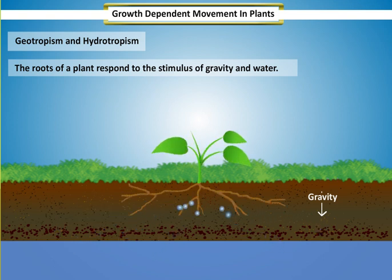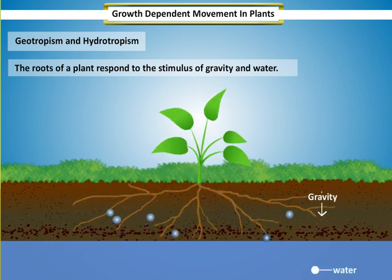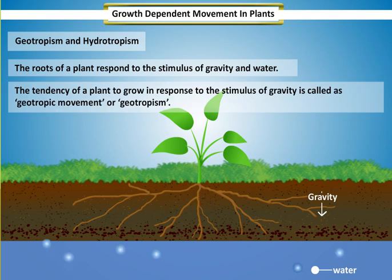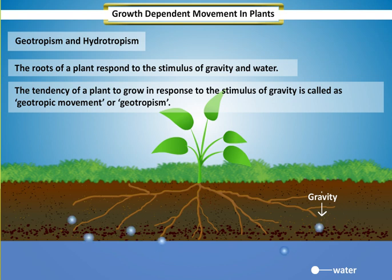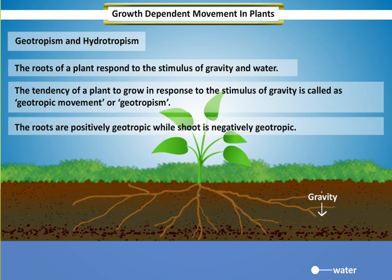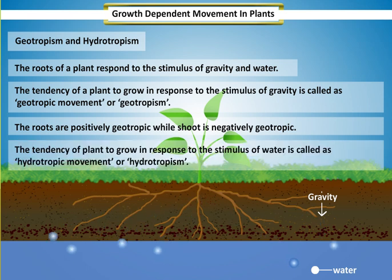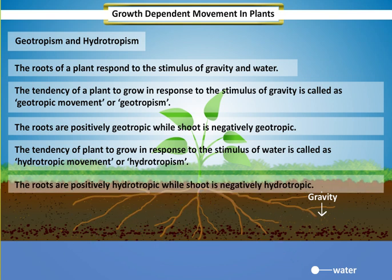The roots of a plant respond to the stimulus of gravity and water. The tendency of a plant to grow in response to the stimulus of gravity is called geotropic movement or geotropism. The roots are positively geotropic while the shoot is negatively geotropic. The tendency of a plant to grow in response to the stimulus of water is called hydrotropic movement or hydrotropism. The roots are positively hydrotropic while the shoot is negatively hydrotropic.